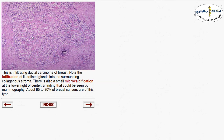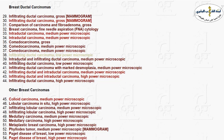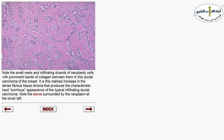In infiltrative malignancy, you can see infiltrative single cells or ducts infiltrating the stroma with stromal reaction — called desmoplasia — which gives the tumor its firmness on cutting surface. The glands are ill-defined, infiltrating within the stroma. Dystrophic calcification — microcalcification — may appear on mammography. Another invasive ductal carcinoma shows the desmoplastic reaction between glands and perineural invasion.